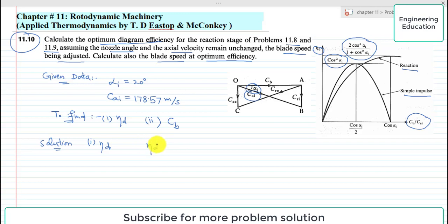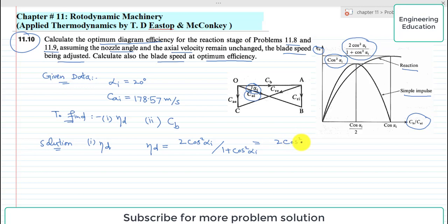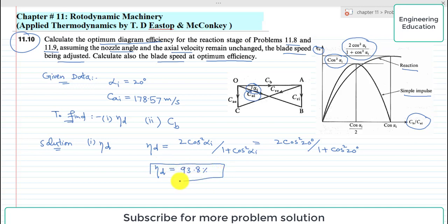For the reaction turbine, the diagram efficiency expression is: 2cos²(α_i) divided by (1 + cos²(α_i)). Substituting α_i = 20 degrees, we get 2cos²(20°) divided by (1 + cos²(20°)). Simplifying this, the optimum diagram efficiency comes out to 93.8 percent.